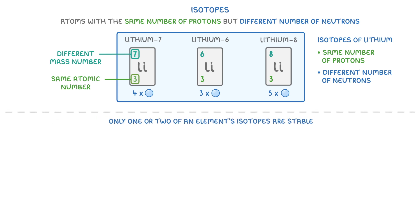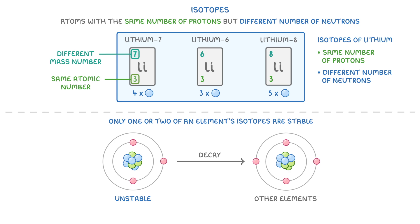Now generally, only 1 or 2 of an element's isotopes are actually stable. The other isotopes, which are unstable, tend to decay into other elements by emitting radiation, like alpha, beta, or gamma radiation. Or sometimes they just emit neutrons. We call this process radioactive decay, and we'll take a closer look at it in the next video.